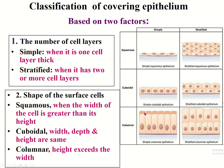The classification of covering epithelium uses a logical system: simple means cells are arranged in a single layer; stratified means cells are arranged in multiple layers. According to the shape of the cell — squamous, cuboidal, or columnar — we classify epithelium as simple squamous, simple cuboidal, simple columnar, stratified squamous, stratified cuboidal, and stratified columnar.